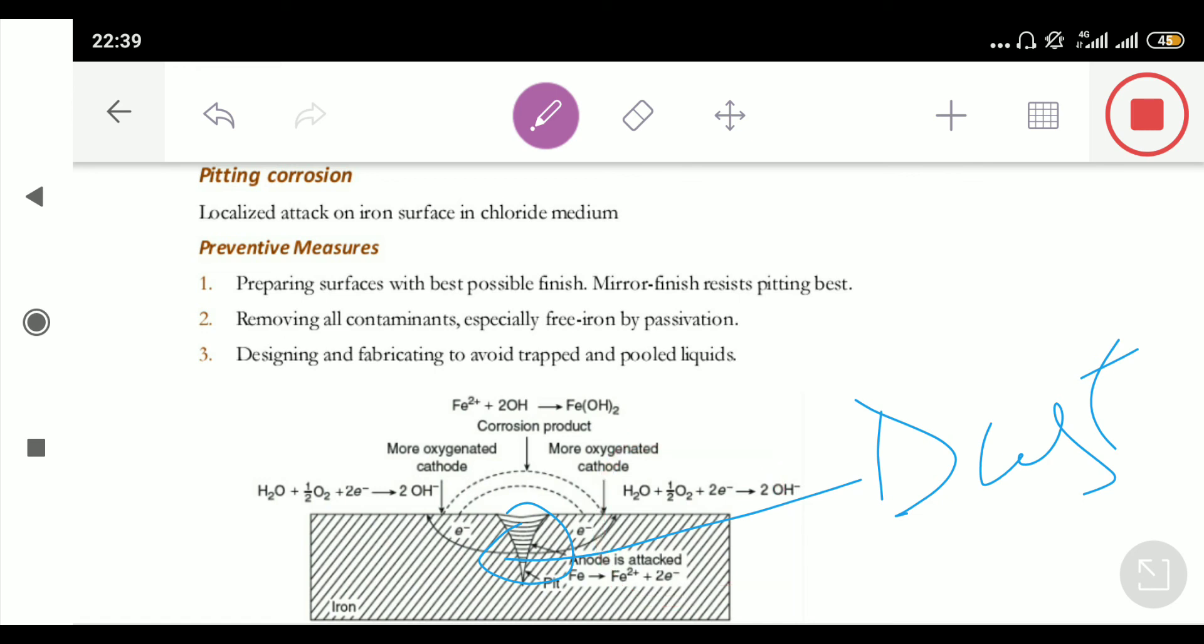this pit part will behave as anode and this part will behave as cathode. So, what will happen? Since this is acting as anode, so corrosion will happen inside this pit. So, with time, more and more corrosion will take place inside this pit.